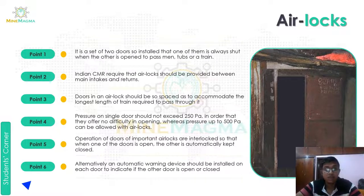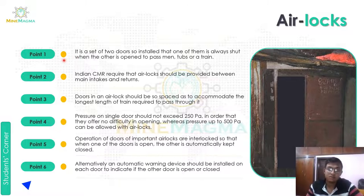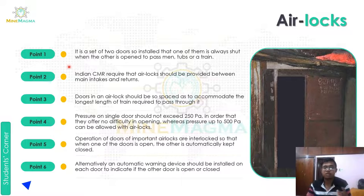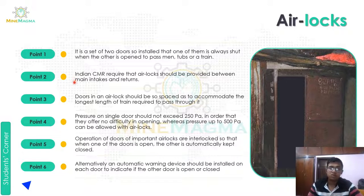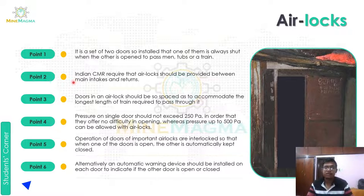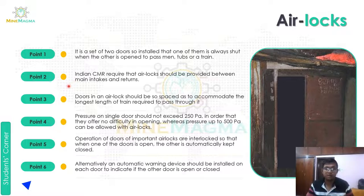First point: an air lock is a set of two doors installed so that one of them is always shut when the other is open, to pass men, tubs, or trains. The doors can also be opened and closed when no one is going through. Second point: Indian CMR requires that air locks should be provided between main intake and return airways.